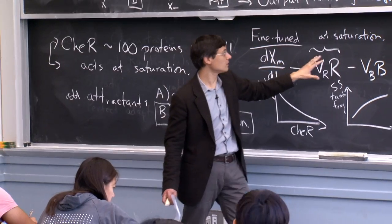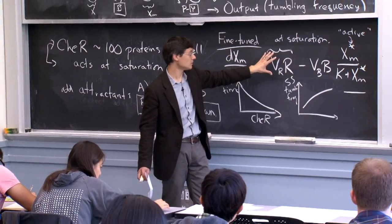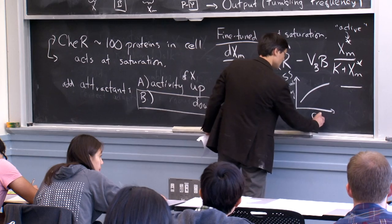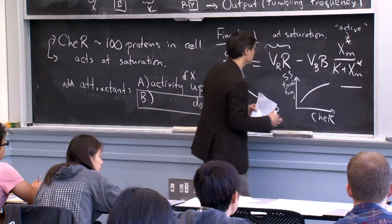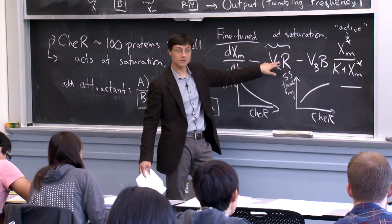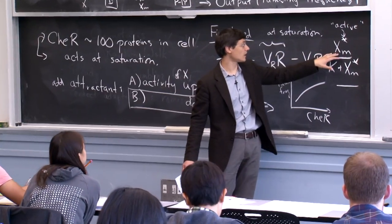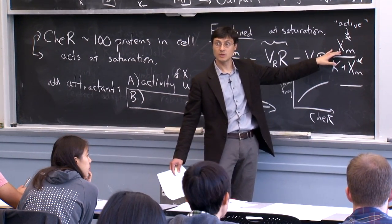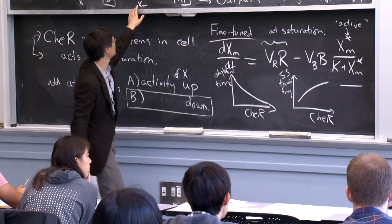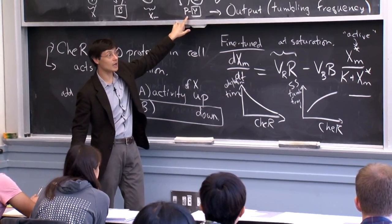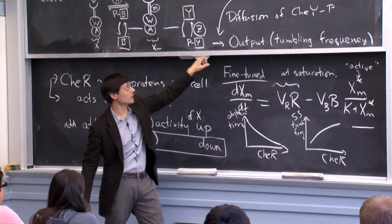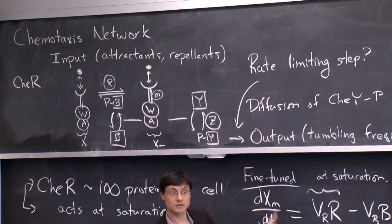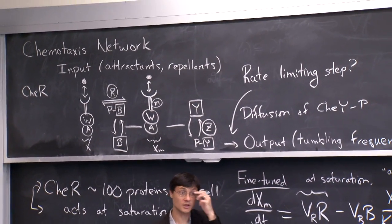Given this model, having more CheR means that at steady state you have more activity. More activity corresponds to more phosphorylated CheY and therefore more tumbling — an increase in the steady-state tumbling frequency. This is consistent with Uri's experimental observations.